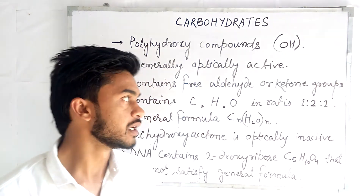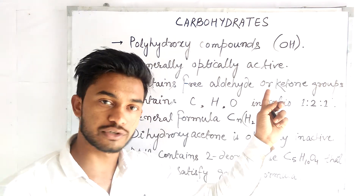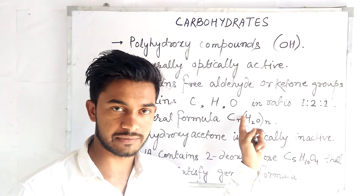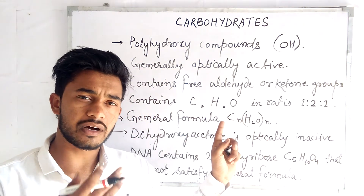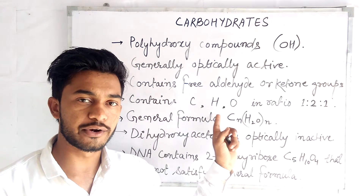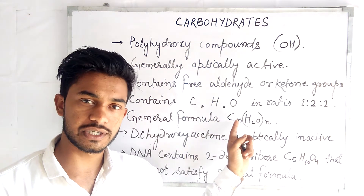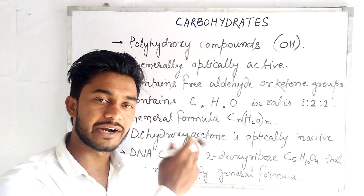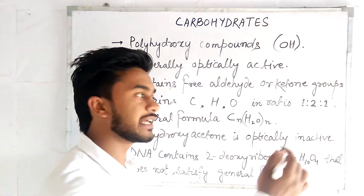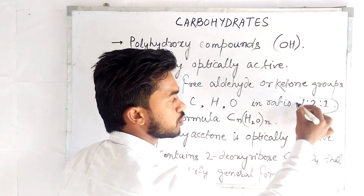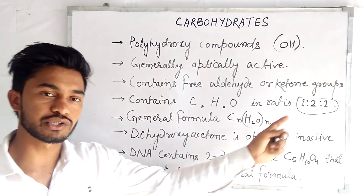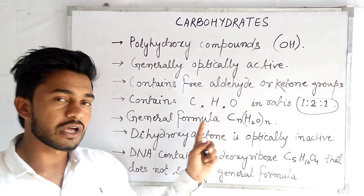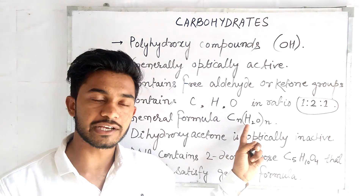Carbohydrates always contain carbon, hydrogen, and oxygen, and sometimes some other compounds. Carbon, hydrogen, and oxygen are always present in a ratio of 1:2:1. The general formula for carbohydrates is CₙH₂ₙOₙ.